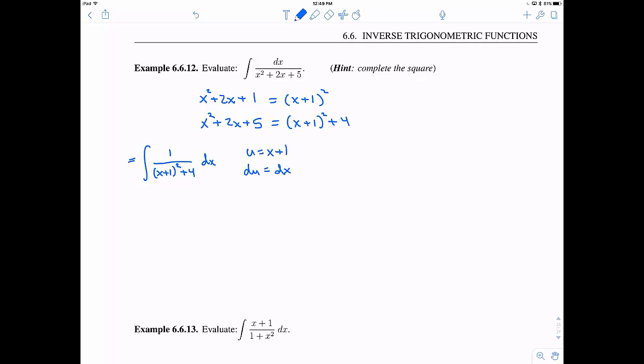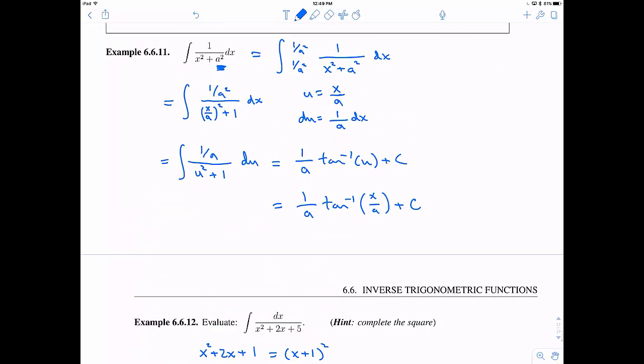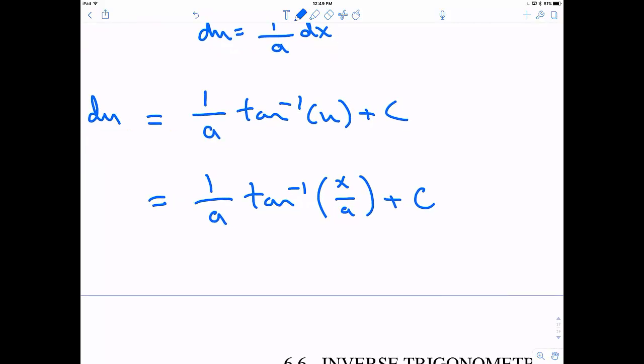So let's do a u substitution. Let's say u is equal to x plus 1, and therefore actually du is equal to dx in this case. So this is going to be u squared plus 4 du, and we're going to integrate that.